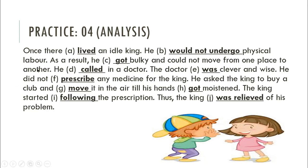'He would not undergo physical labor' — it was possible but he didn't do it, so 'would not' is used. 'Got bulky' — past form, so we use 'got.' 'He called in a doctor. The doctor was clever and wise. He did not prescribe any medicine for the king. He asked the king to buy a club and move it in the air till his hands got moistened. The king started following the prescription. Thus, the king was relieved of his problem.'